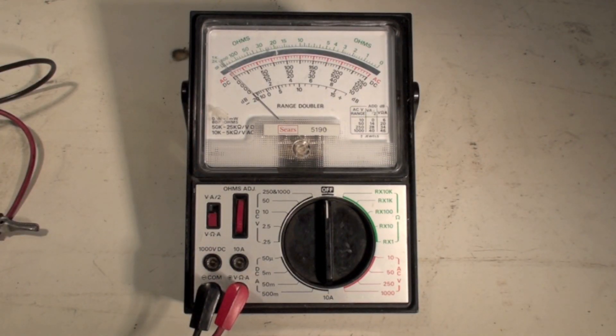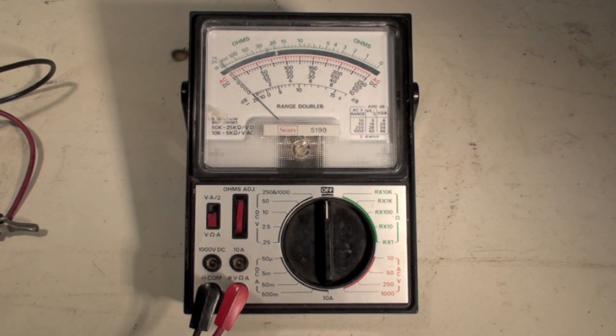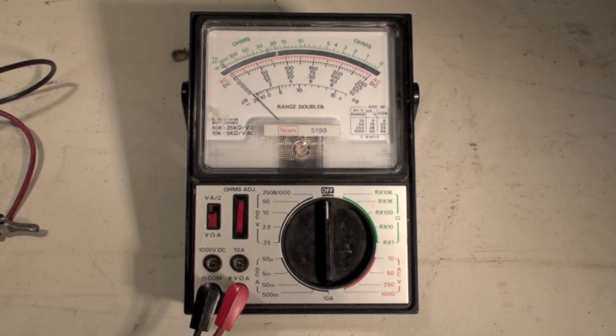Okay, on the multimeter, we're going to start out with one of these antiques. This is an old analog meter, got quite a few years on it. This is a volt-ohm meter.